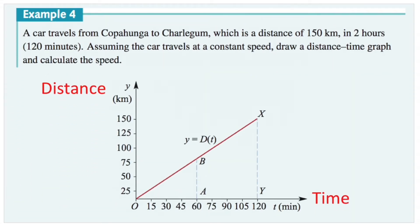Here's an example. A car traveled a distance of 150 kilometers in two hours. Assuming the car travels at a constant speed, draw a distance versus time graph and calculate the speed. We know this graph starts at zero, zero because when time is zero, we've traveled zero kilometers. The car traveled 150 kilometers in two hours, so after two hours — or 120 minutes — the distance is 150 kilometers. So we found our two ordered pairs on this graph.